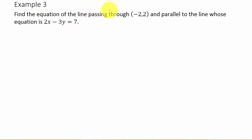Alright, so let's take a look at this. We have find the equation of the line passing through the point (-2, 2) and parallel to the line whose equation is 2x - 3y = 7.